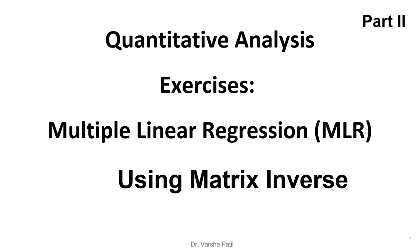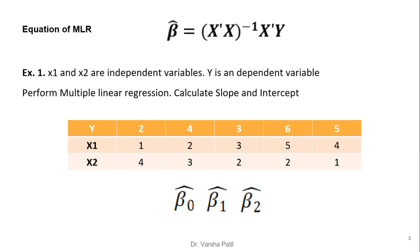Dear listener, welcome to my channel. The topic of this video is exercises on multiple linear regression using the matrix inverse method. In the Part 1 video, the equation for multiple linear regression was derived. Now let us start with the exercises using matrix inverse. The equation for multiple linear regression is: beta cap equals x-dash x inverse multiplied by x-dash y.